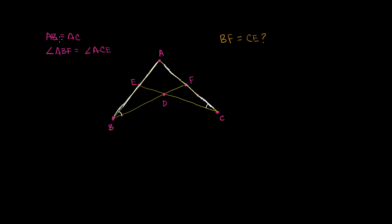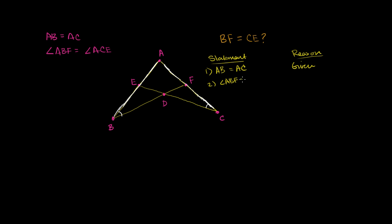Let's try to do that. I'll do a two-column proof so you can see how to do it more formally. Statement one: AB is equal to AC — given. Statement two: angle ABF is equal to angle ACE — also given.